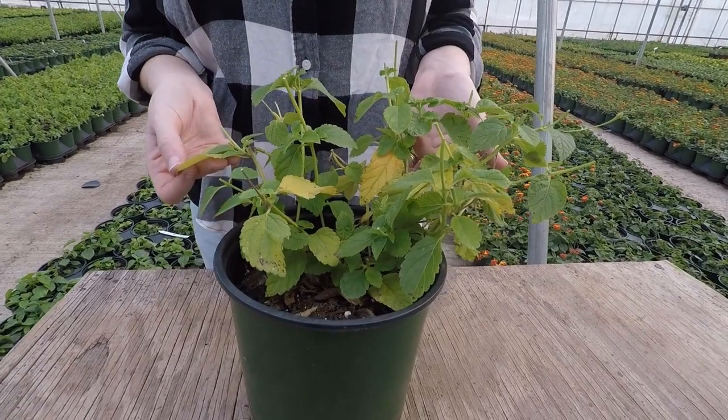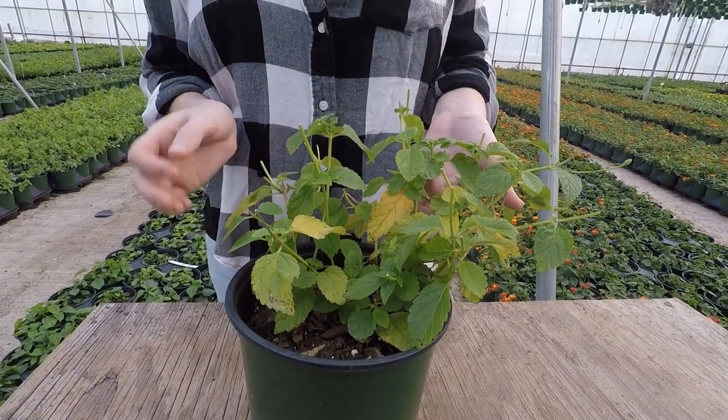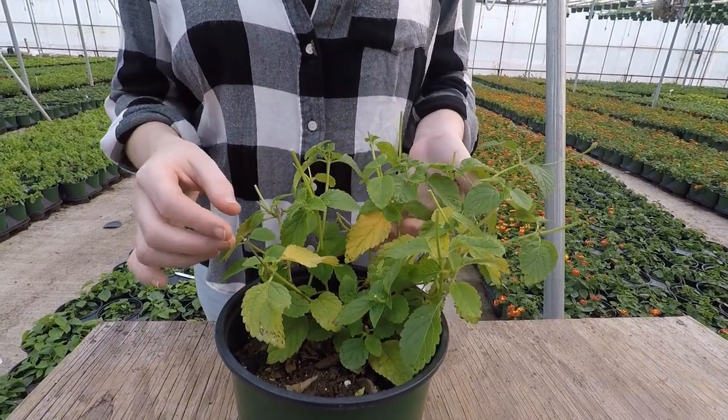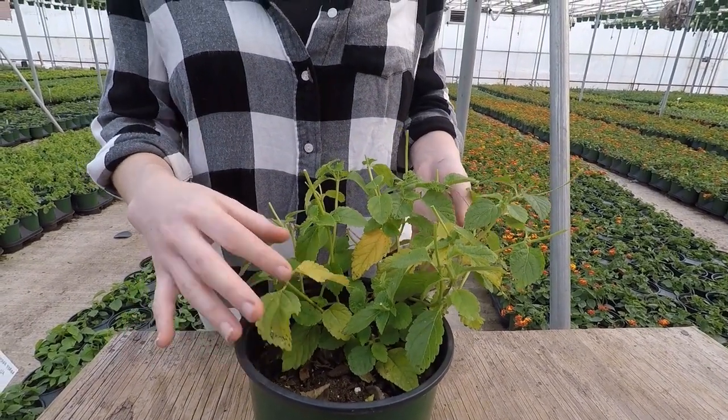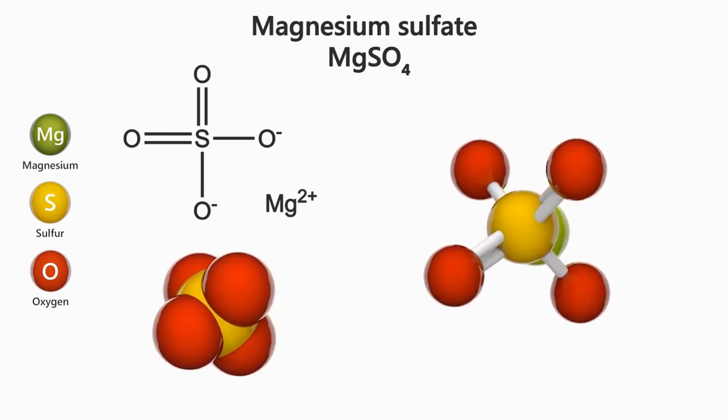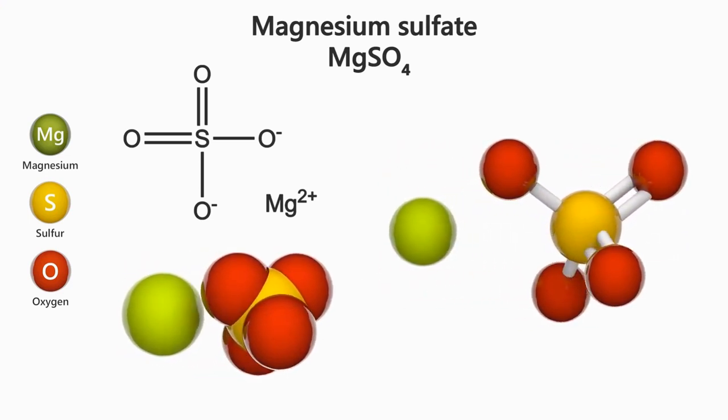Epsom salts are known to reduce stress on plants and refresh them by washing away nutrient buildup from the growing medium and roots. In addition to giving your plants a good cleanse, Epsom salts can also help regulate the magnesium and sulfur content of your soil, especially if your EC levels are out of normal range.